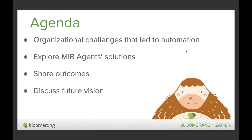Many organizations say that the thought of integrating other apps with Bloomerang feels overwhelming or even unattainable. Our hope is that by the end of this webinar you'll see how one organization was able to successfully implement automations across the organization and attain some pretty significant outcomes that further their mission and align with their goals. Today we're going to introduce MIB Agents and the challenges they faced, talk about the solutions they deployed, share the outcomes they've experienced, and then discuss their future vision as they explore other automation opportunities.